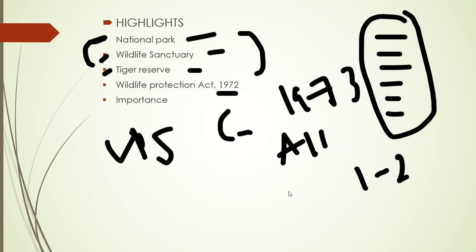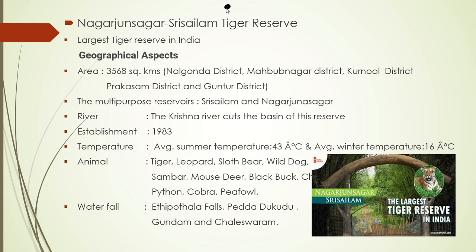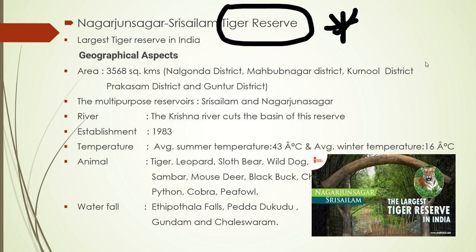Now we will discuss tiger reserves. The Government of India launched a special program called Project Tiger in April 1973. The main intention is to protect and safeguard tigers in India.